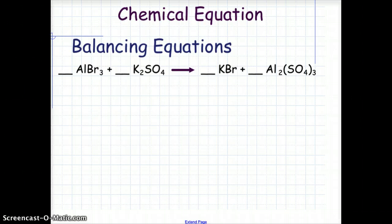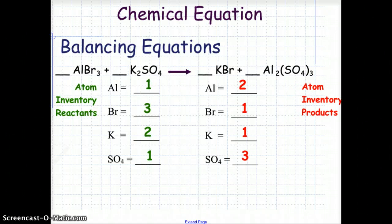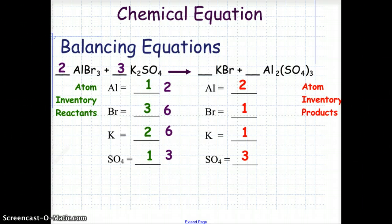For the case of aluminum bromide combined with potassium sulfate to yield potassium bromide and aluminum sulfate, we again begin with the atom inventory of reactants and products. We have 1 aluminum, 3 bromine, 2 potassium, and — keeping polyatomic ions together — 1 sulfate in the reactants, but 3 sulfates in the products. To balance this, we place a 2 in front of the aluminum bromide, changing aluminum to 2 and giving us 6 bromine. We place a 3 in front of the potassium sulfate, giving us 6 potassium and 3 sulfates. Finally, we place a 6 in front of the potassium bromide to give us 6 bromine and 6 potassium. We now have a balanced chemical equation.